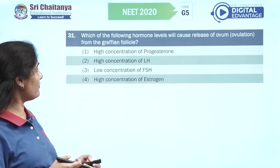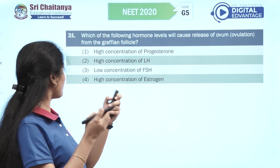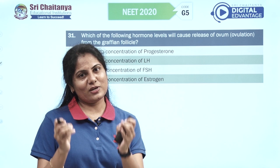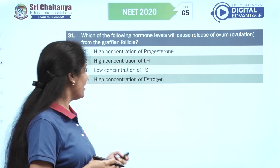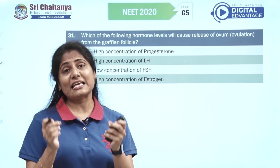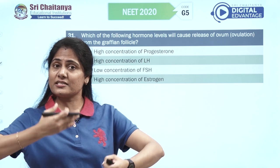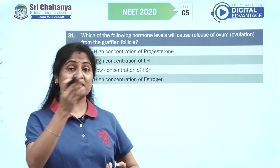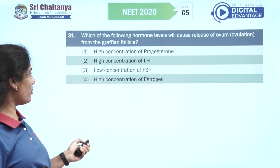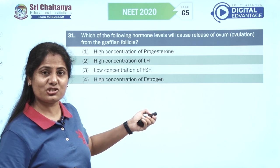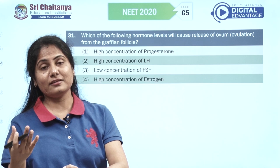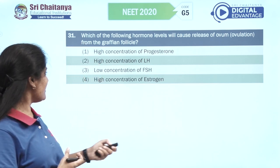Which hormone level causes release of ovum from the Graafian follicle? A slightly tricky question because from NCERT you would have learnt about LH surge — increase in LH concentration leads to ovulation. But that option is not available here. Instead we go with higher concentration of estrogen, as the growing follicle also secretes estrogen. That's your right option.